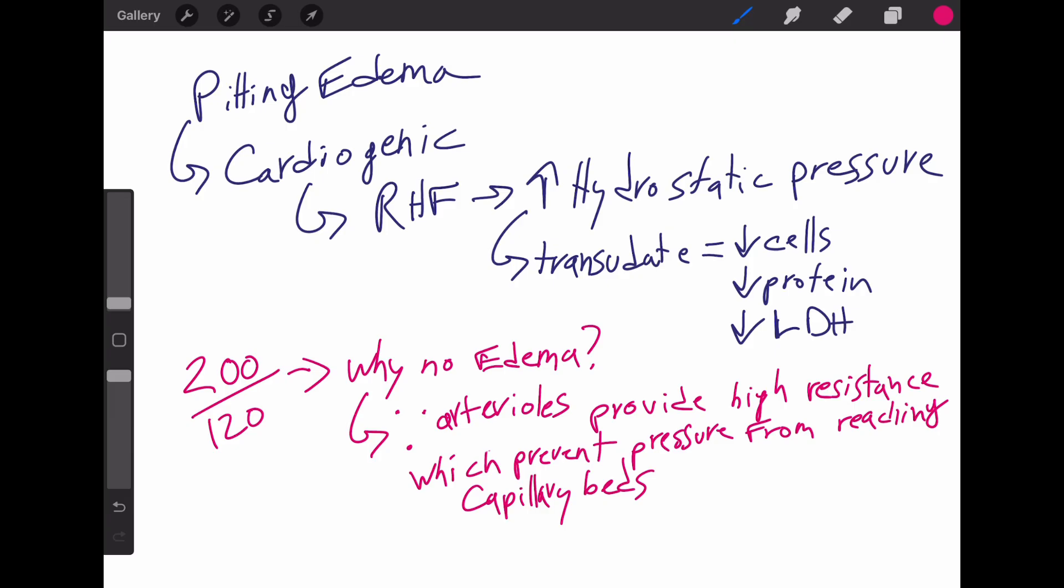Now, in terms of a question, you might be wondering why systemic hypertension, for example, blood pressure 200 over 120, doesn't lead to peripheral edema. It's because the arterioles provide a high resistance, which prevents excessive pressure from reaching the capillary beds. Therefore, arterioles are the major site of vascular resistance, and they keep the capillary hydrostatic pressure within a normal range.